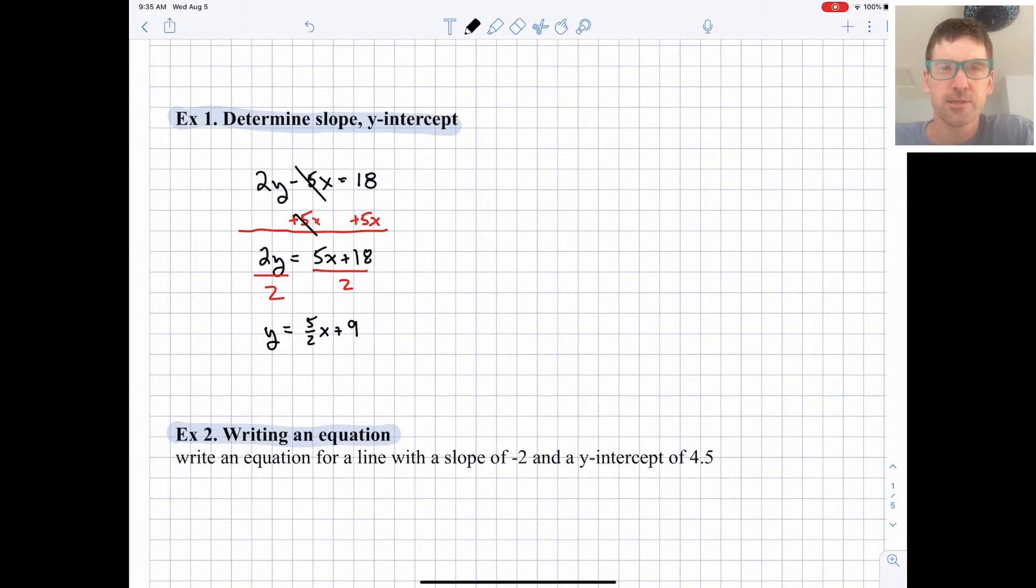So we have y equals 5 halves x plus 9. I think slope is relatively easier to work with as a fraction especially if you're graphing. The fraction is easier because this 5 over 2 we have a rise of 5 for every run of 2 so it would make it easy to graph. So our slope is 5 halves and our y intercept is 9.